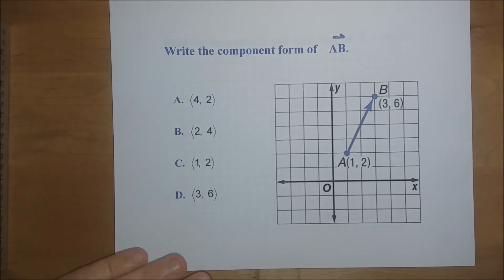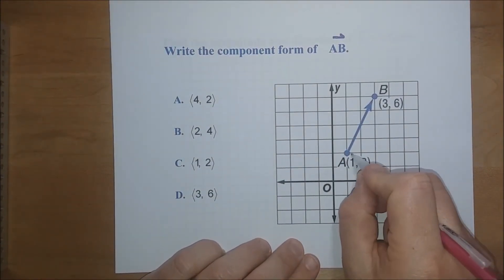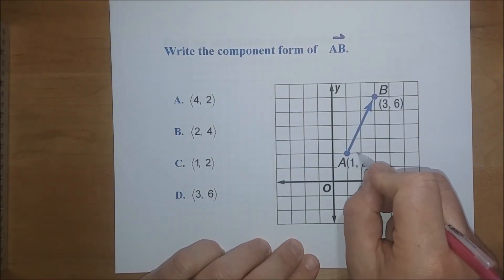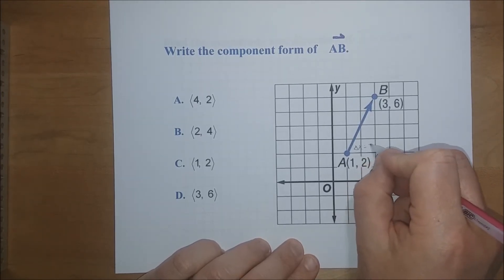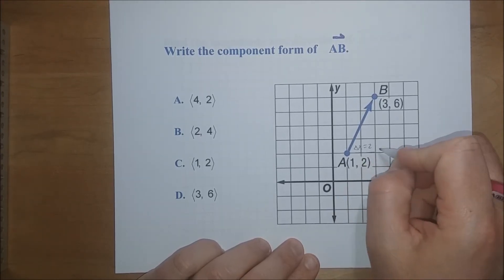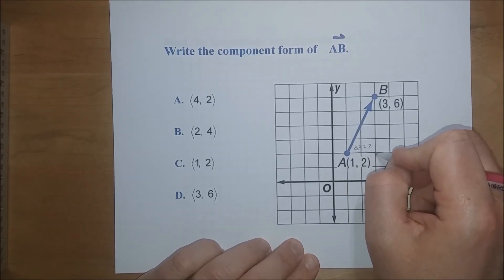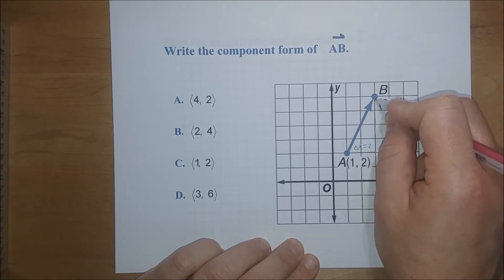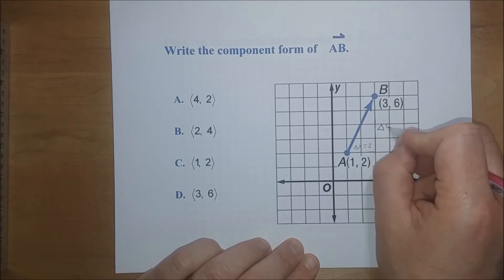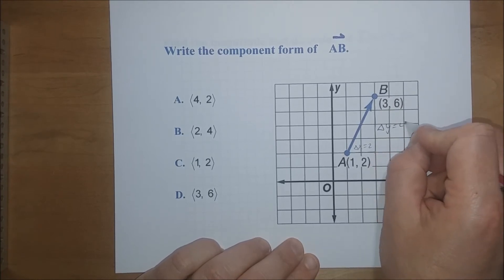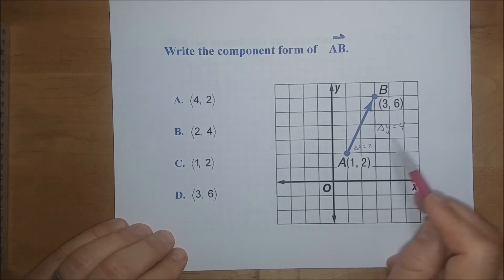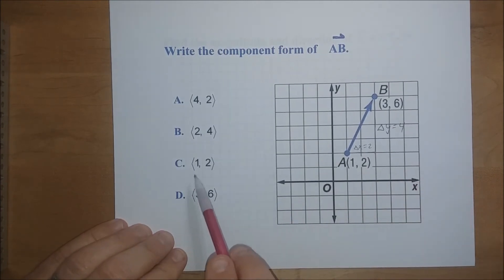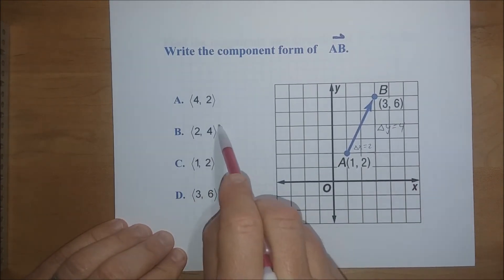For this next vector, starting at the initial point, I go over two in x so delta x equals two, and up four in y so delta y equals four. The component form is [2, 4].